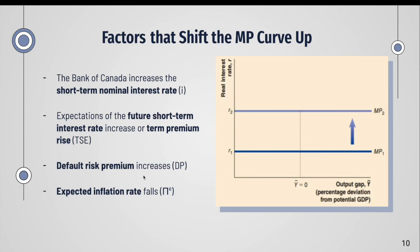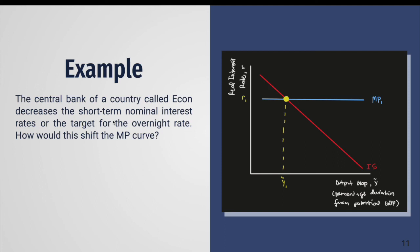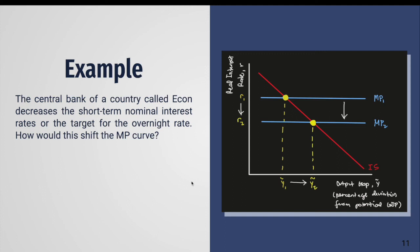As an example, the central bank of a country called Econ decreases the short-term nominal interest rate — the target for the overnight rate. Because the central bank decreased the short-term nominal interest rate, the MP curve will shift down. This causes the long-term nominal interest rate to decrease, and as shown, it increases the output gap, with the movement shifting to the right as the MP curve shifts down. That covers everything for the MP curve and the ISMP model.